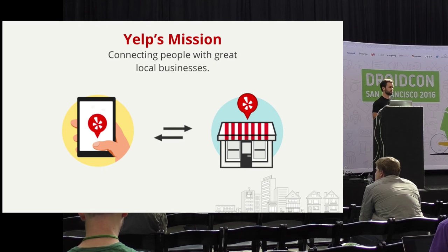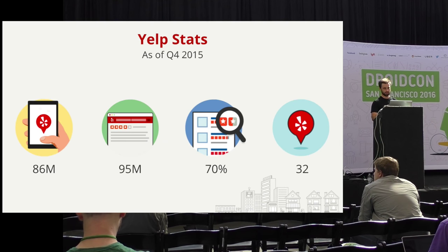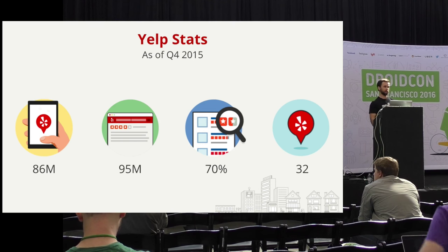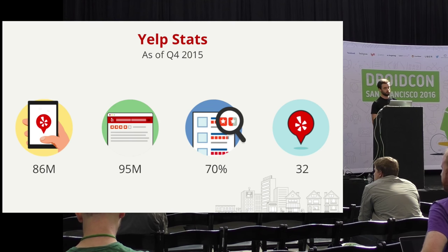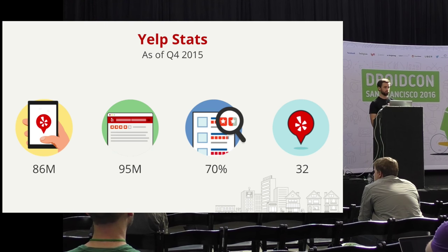If you live in San Francisco, you know it's the best way to find businesses here, and if you're visiting, I highly recommend searching for burritos. Quick stats about Yelp: as of Q4 of last year, we had 86 million unique monthly visitors, a total of 95 million reviews, 70% of our searches come from mobile, and we're present in 32 countries.